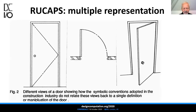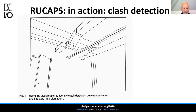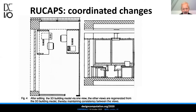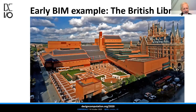Here are just some illustrations from that paper of 1986. The door has different representations whether it's viewed in elevation, plan, or perspective. We can do things like clash detection to do coordination between different building subsystems. And when we edit the model, all the views change. The graphics is very simple and crude, but basically the information system is exactly the same as BIM. The British Library on Euston Road is a classic building built with RU-CAPs.